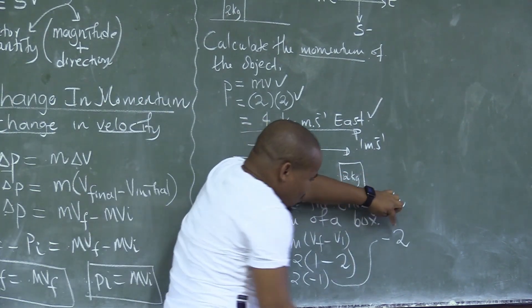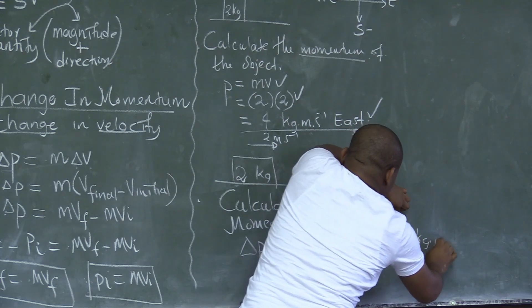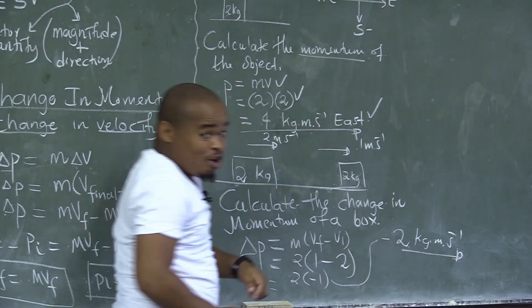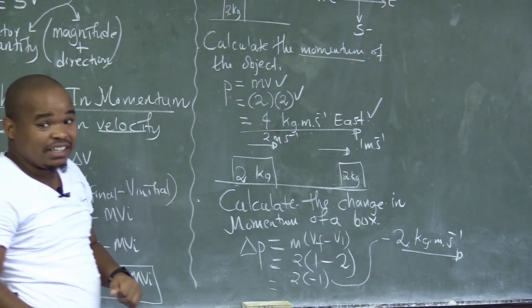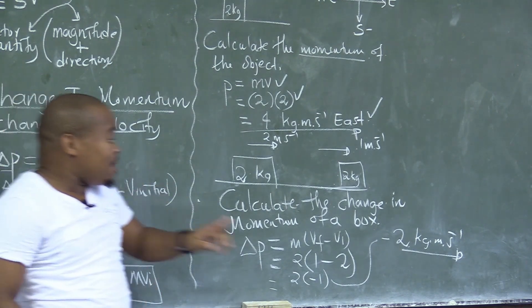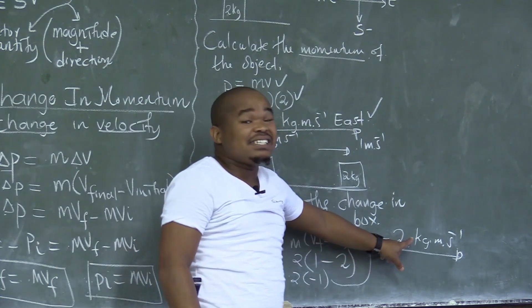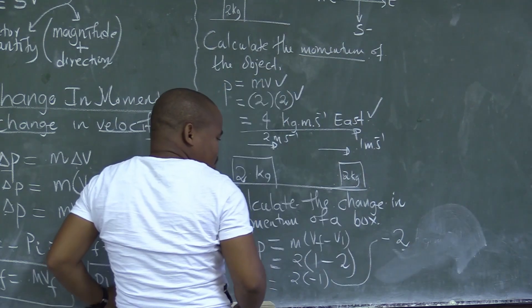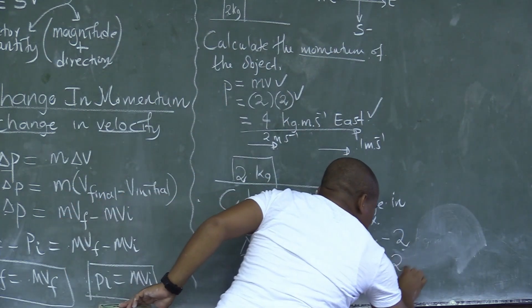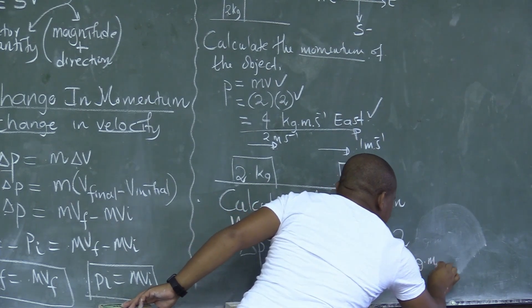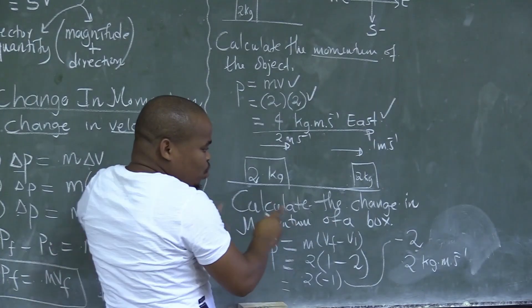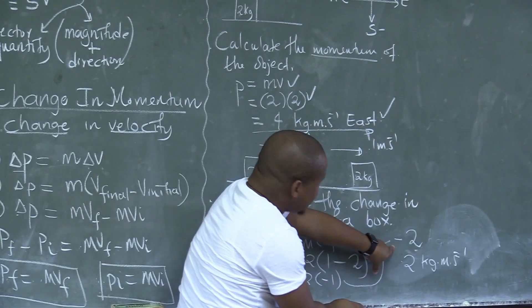That is a common misconception. I will not allow the marks for this because this is wrong. If you have negative 2, if you multiply, it's 2 kilograms meters per second — it's negative.